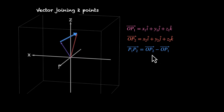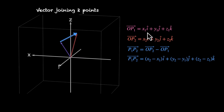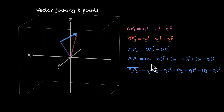Using the triangle law of addition, vector P1P2 equals OP2 minus OP1 — final minus initial. Subtracting coordinates gives: (x2 − x1) i-cap + (y2 − y1) j-cap + (z2 − z1) k-cap. The magnitude of P1P2 is the square root of (x2−x1)² + (y2−y1)² + (z2−z1)². This is the same method we use to find the magnitude of any vector.